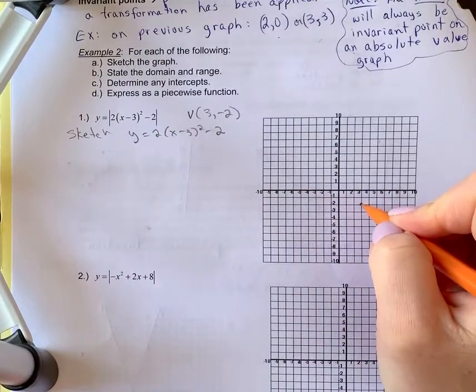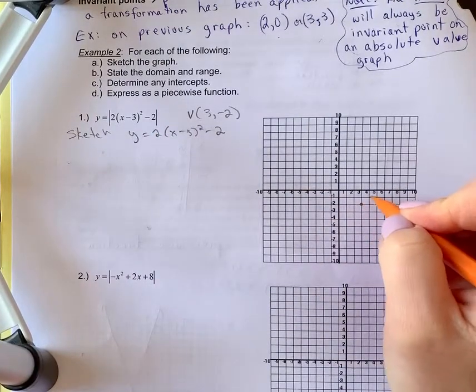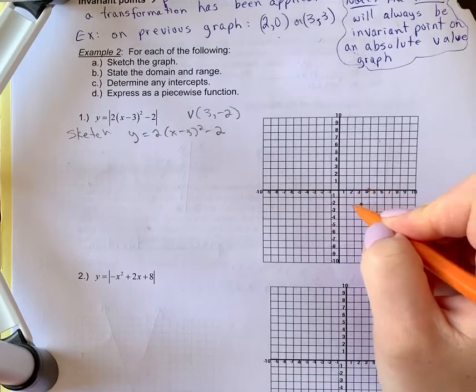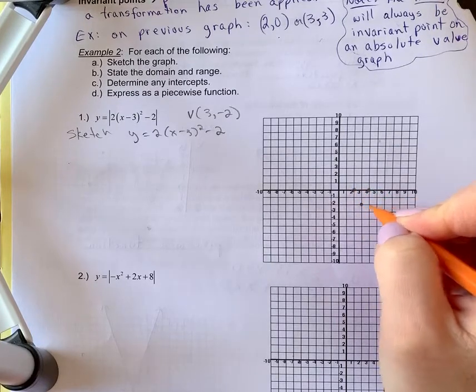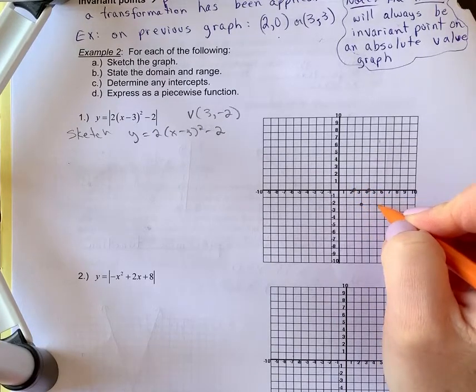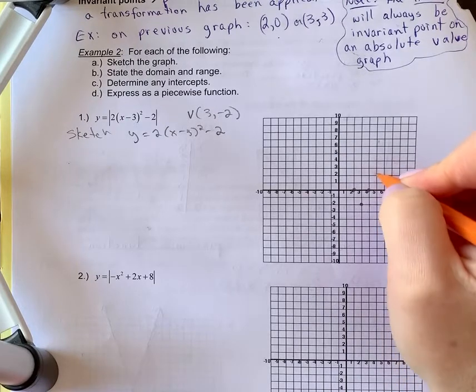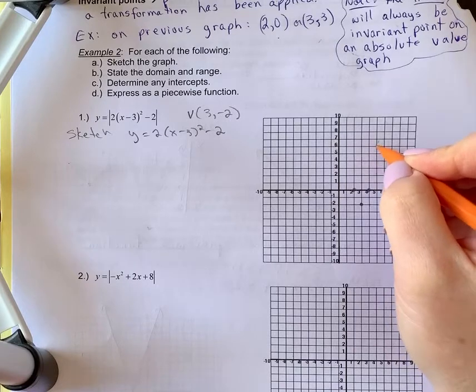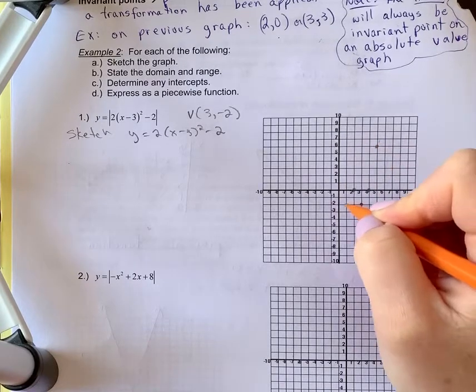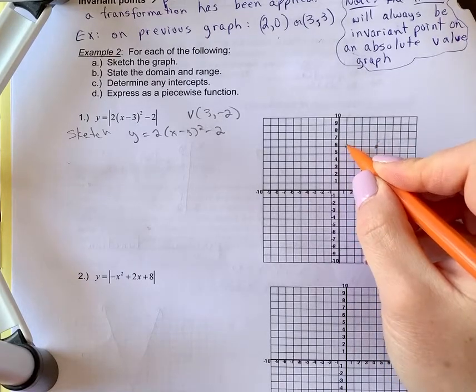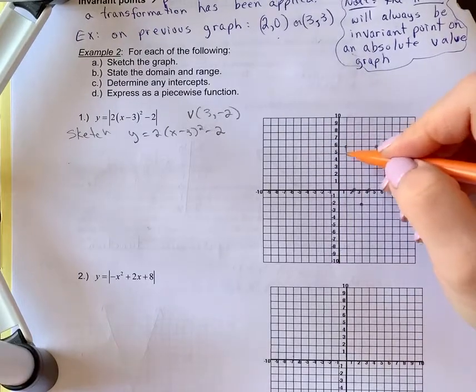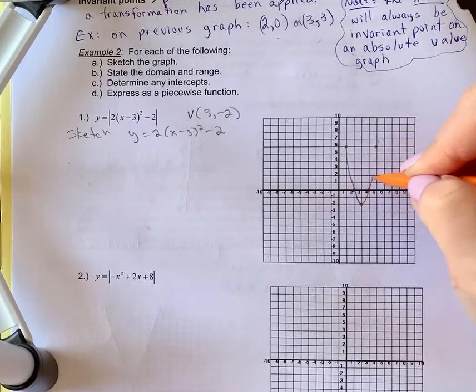So instead of going over normally, normally we go over 1, up 1. We're going to go twice as far, over 1, up 2, over 1, up 2. Over 2, 2 squared is 4. We normally go up 4, but now we're going up twice as far. So we're going to go up to 8. So that puts us at the 6. Over 2, up 8. So this is my parabola right here.